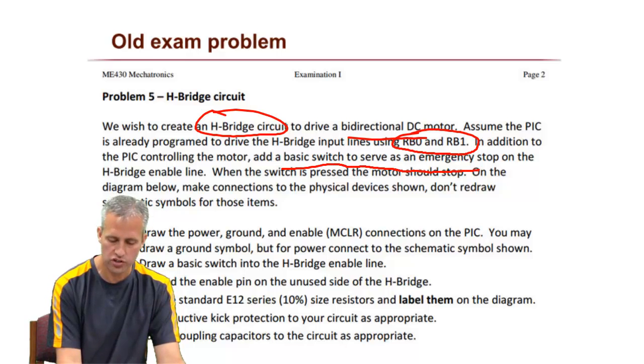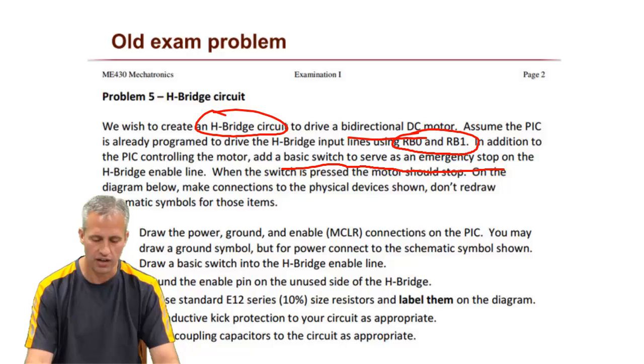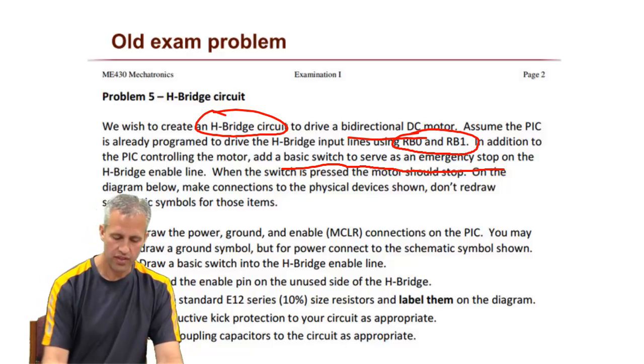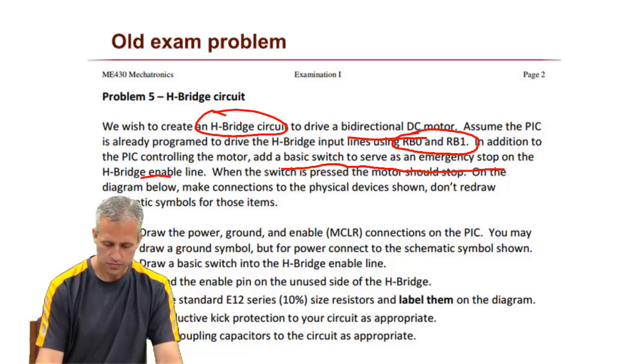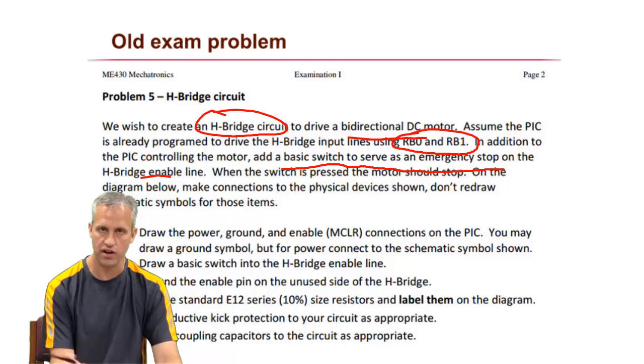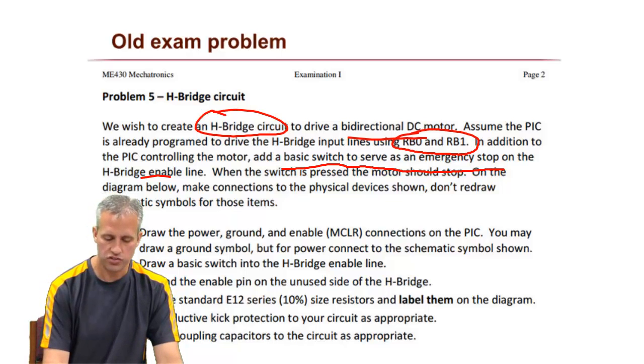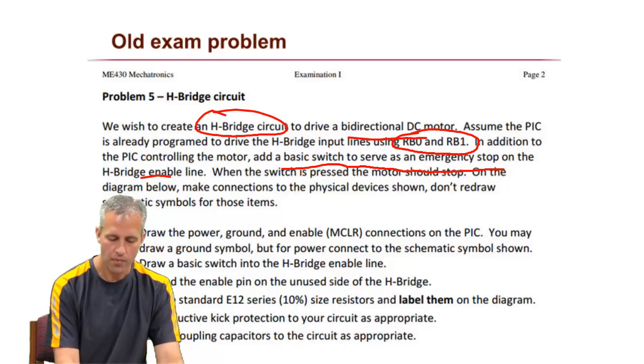We learned about basic switch circuits in class. That's going to go to the enable line. So when the button is pressed, it cuts off the enable line. It's not going to the PIC, it's going straight to the H-bridge. Make the connections on the one shown.